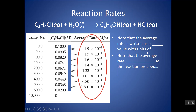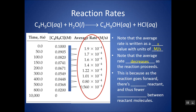Notice the average rate is written as a positive number, and the units are molarity per second. Notice that the average rate over time is decreasing. That does make sense, because as the reaction goes forward, I'm using up reactant, so there's less reactant and there will be fewer collisions. So over time, the reaction rate typically slows — it's the greatest at the start of the reaction.